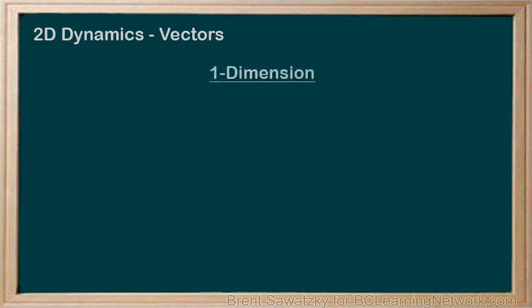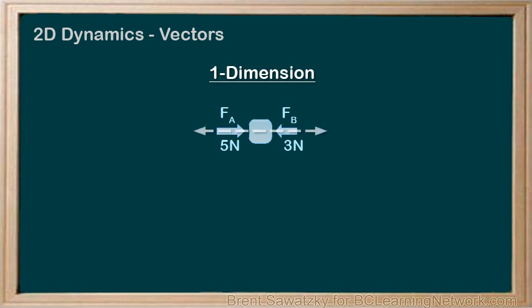Let's establish a starting point for this discussion by reminding ourselves how we've been adding forces in one-dimensional problems. In a 1D situation, we might have two forces: FA equals 5 newtons to the right, and FB equals 3 newtons to the left, for example. Remember that in a 1D situation, all the forces happen along a single line.